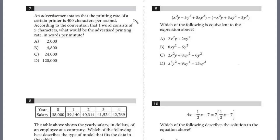An advertisement states that the printing rate of a certain printer is 400 characters per second. According to the convention that one word consists of five characters, what would be the advertised printing rate in words per minute? This is a unit conversion question. We have 400 characters a second, but we're told that one word consists of five characters, so let's figure out how many words per second.